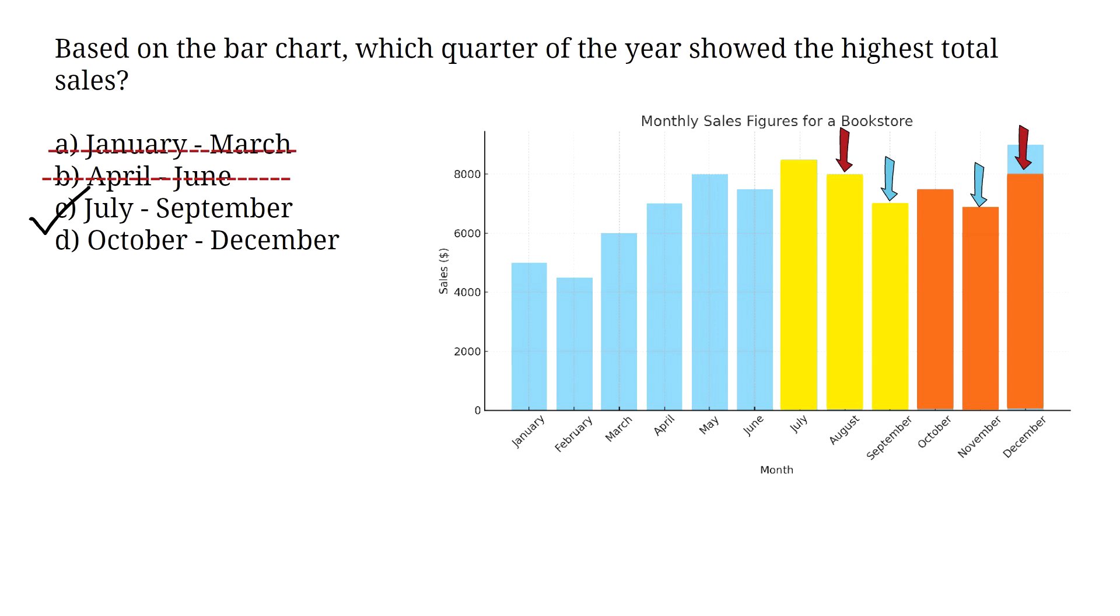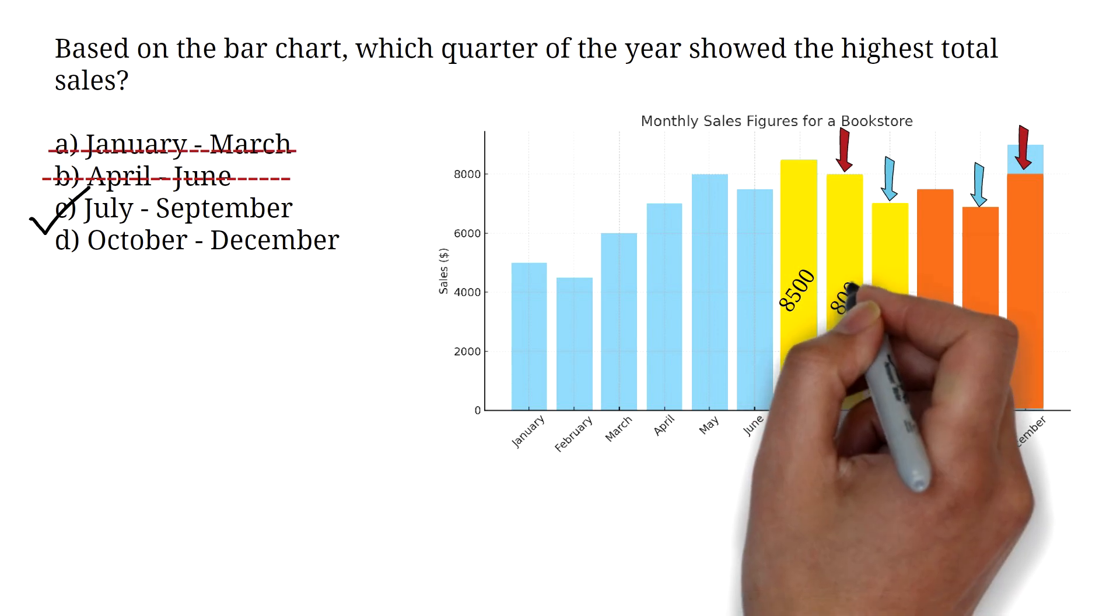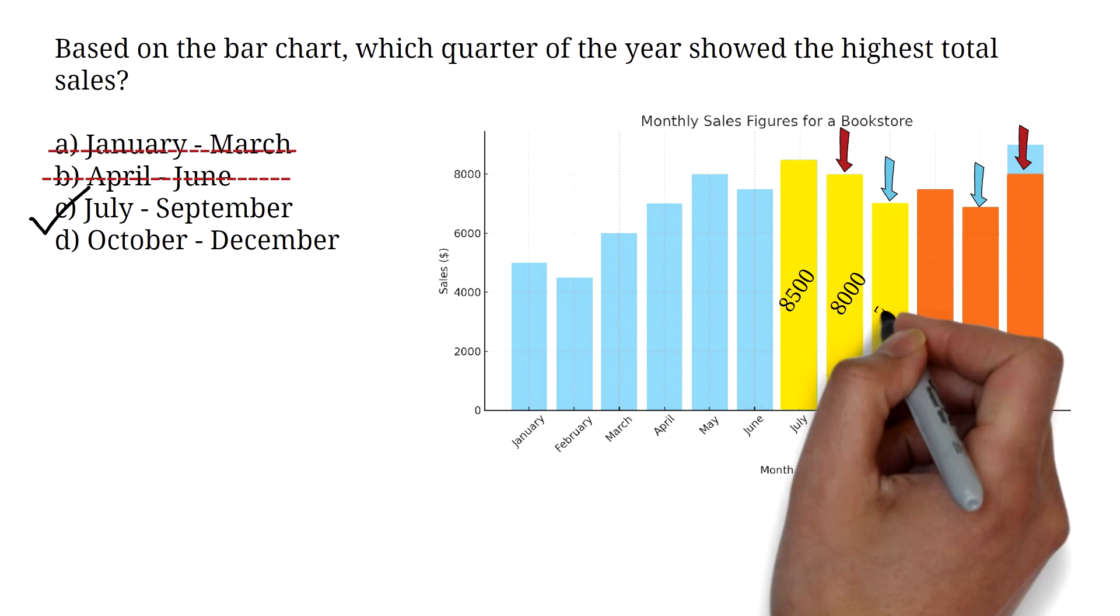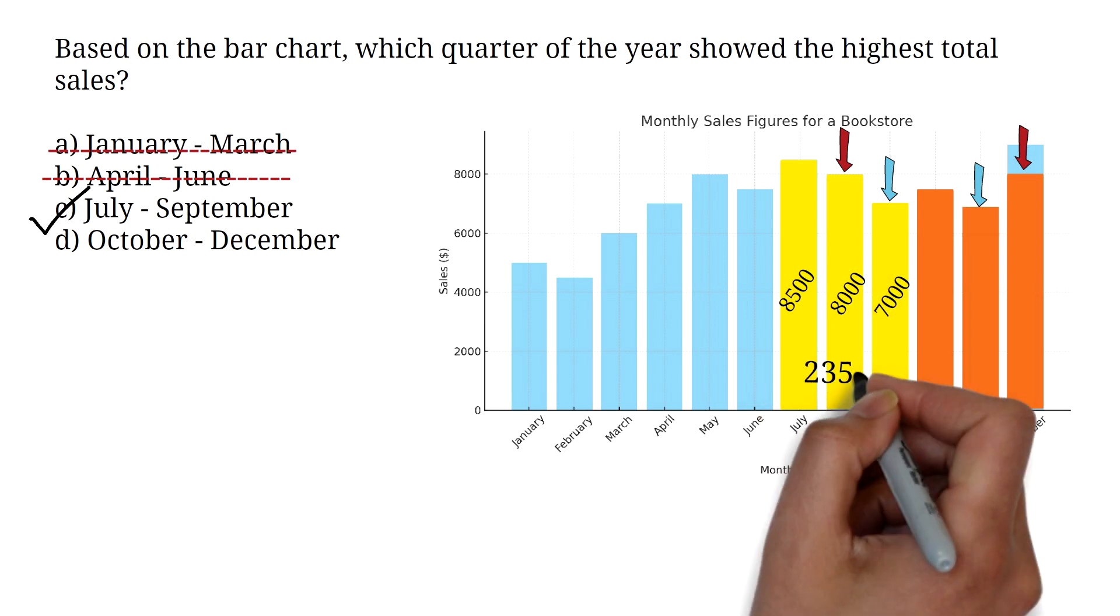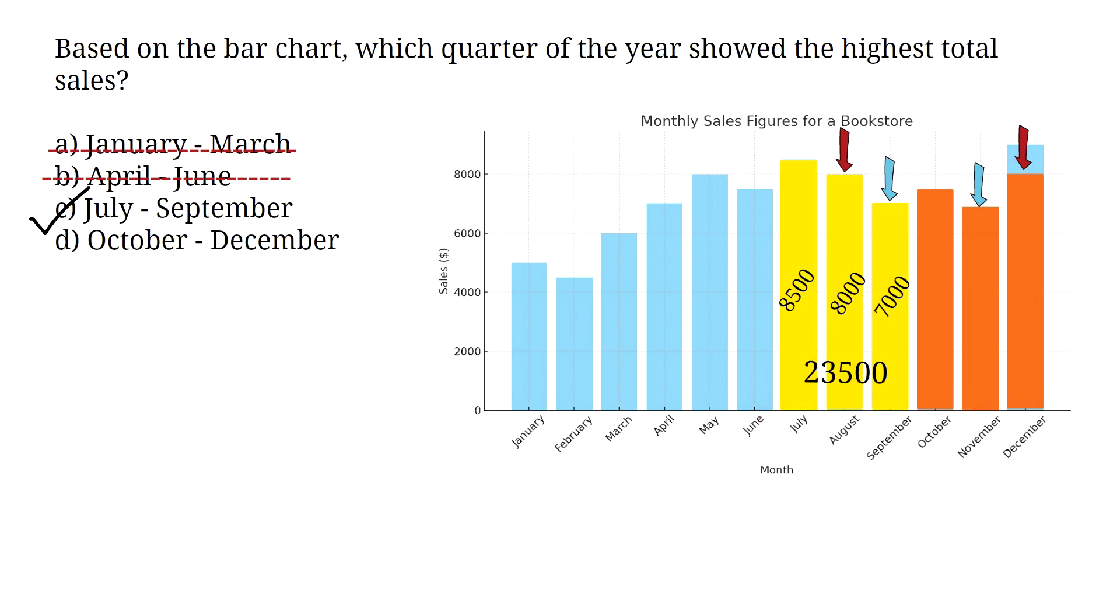Eyeballing might not work for everyone. If that is you, then you can use estimates for each of the bars. Add the months in every quarter and compare. For example, we can estimate the sales for July as 8,500, the sales for August as 8,000, the sales for September as 7,000. Add these together to get 23,500 in sales for July to September.